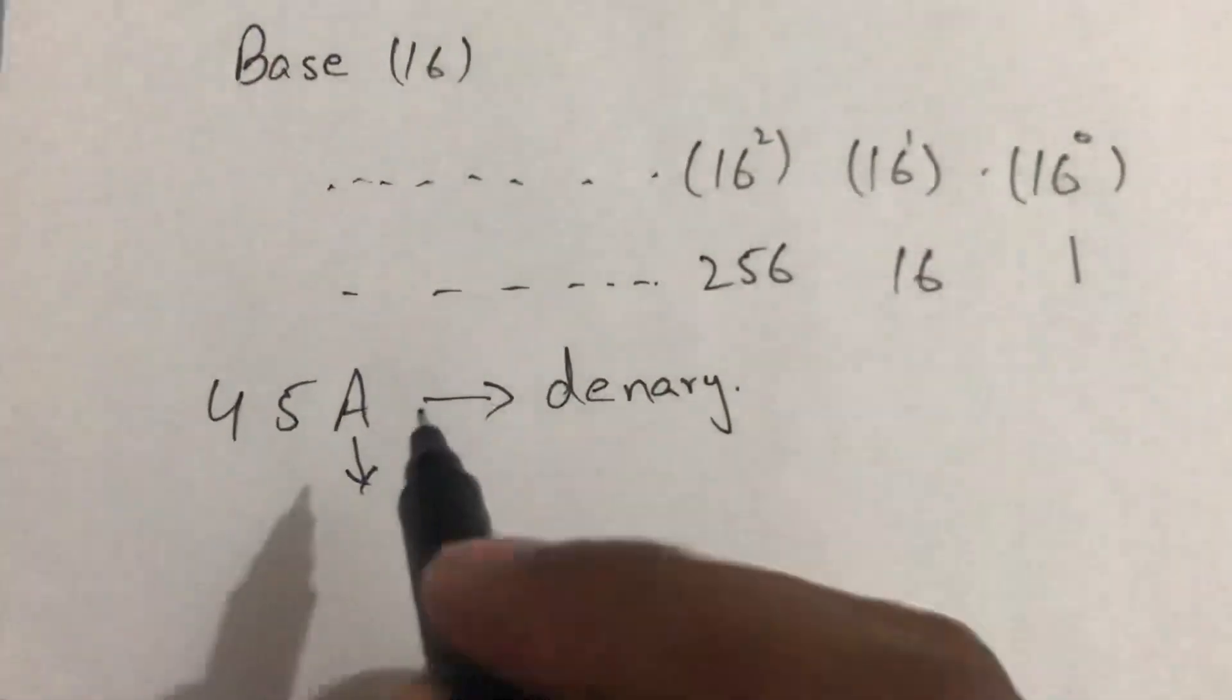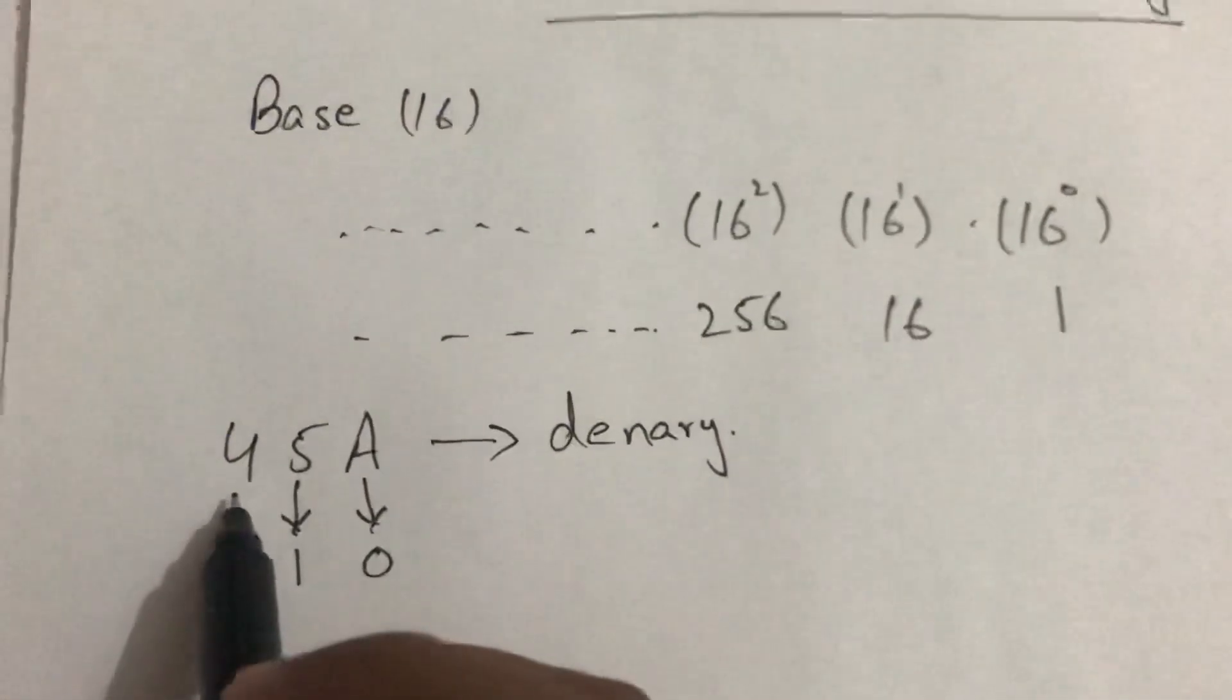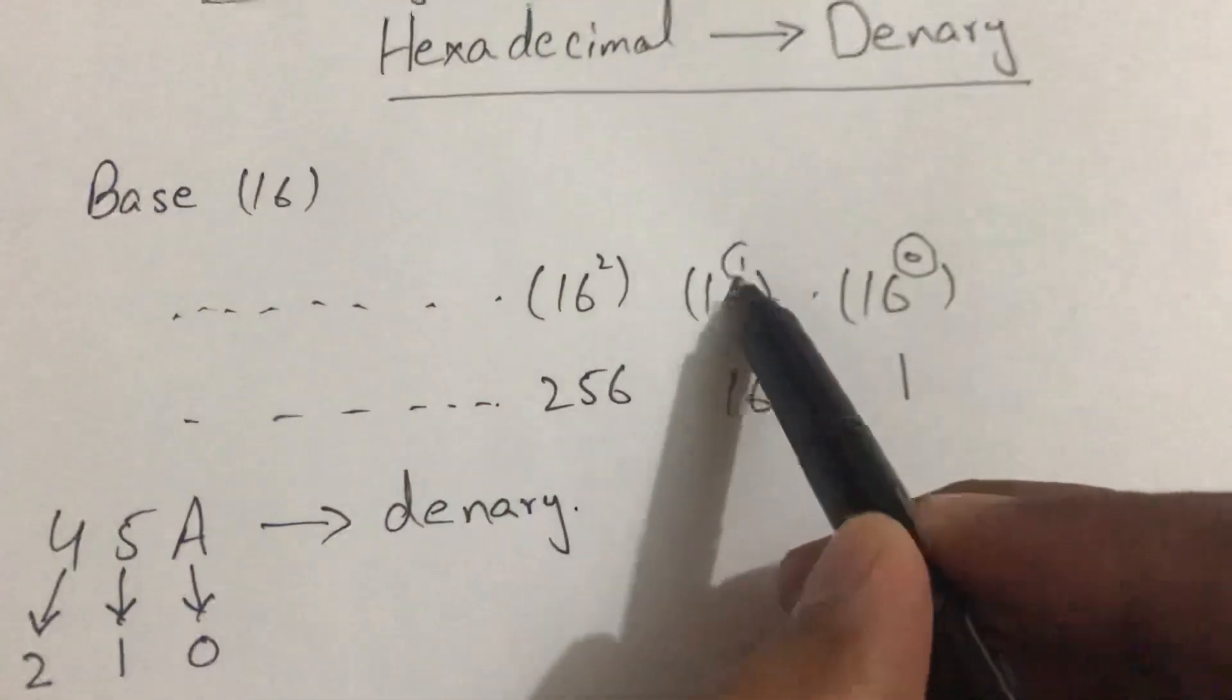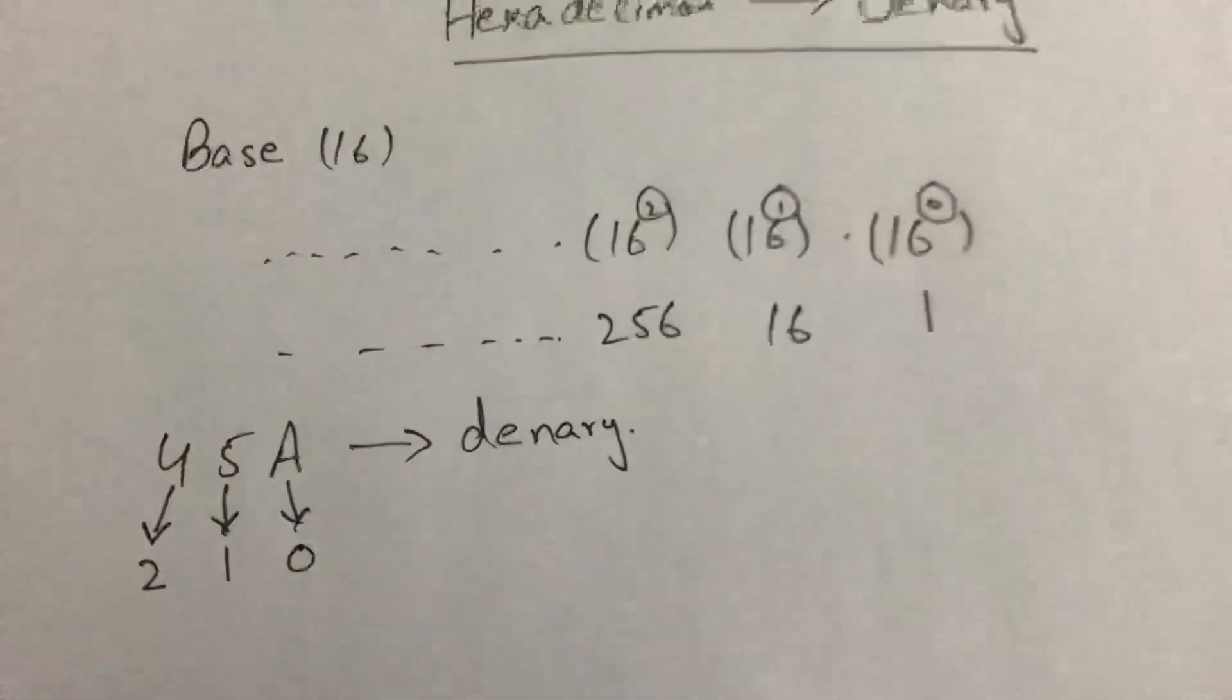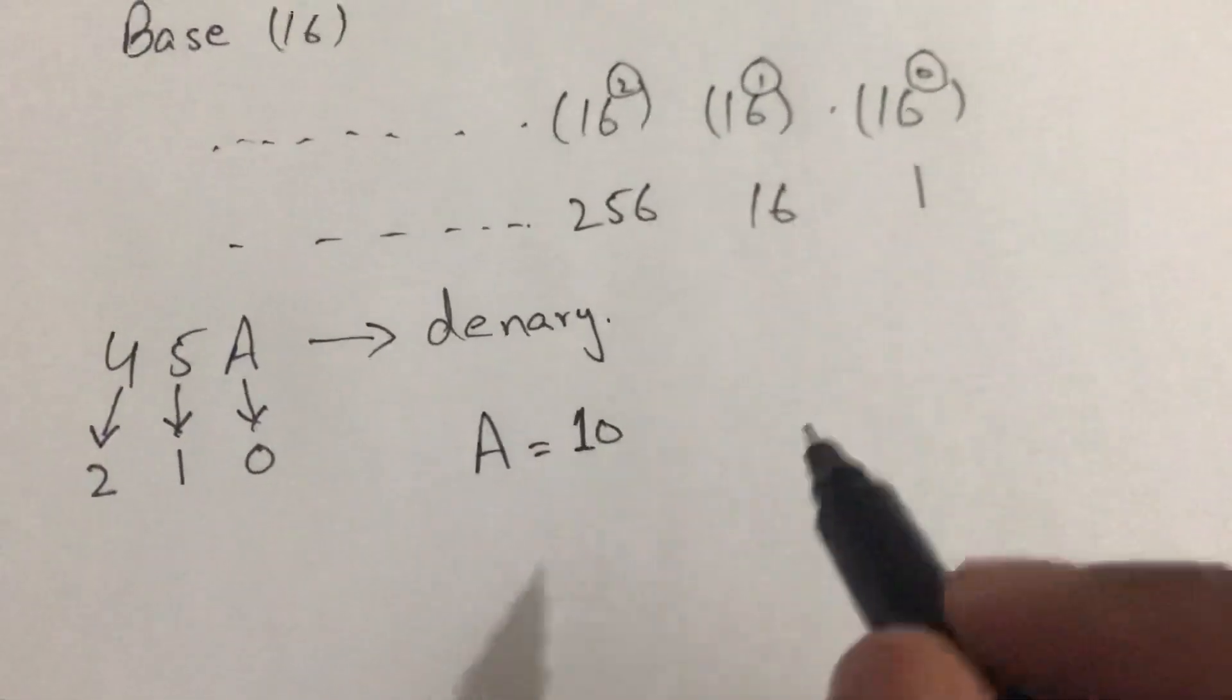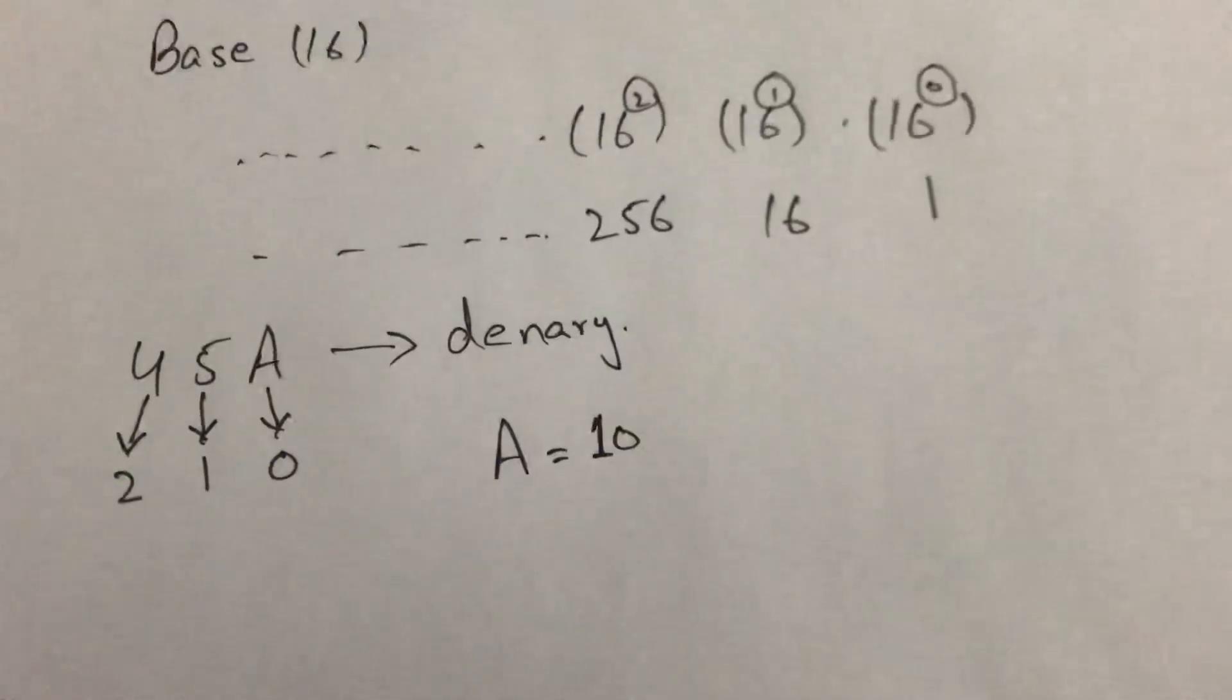A is placed at 0 index, 5 is placed at 1 index, and 4 is placed at 2nd index. As A is equivalent to 10, or the value of A is equal to 10 in the denary value, so we have to multiply the values with their indices.